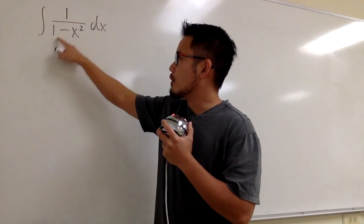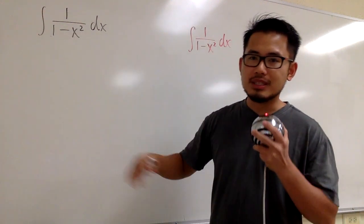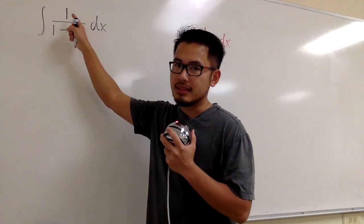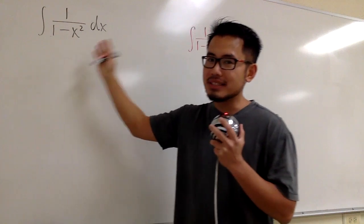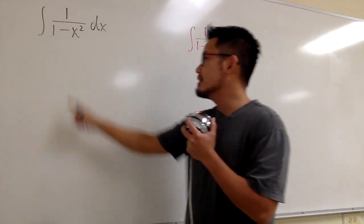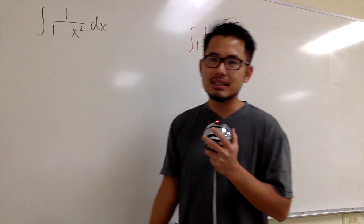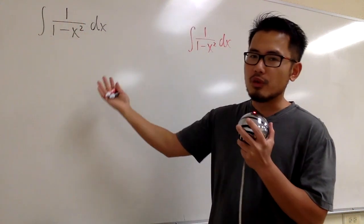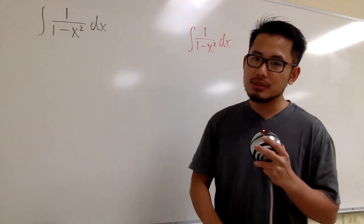For the first one, the integral of 1 over 1 minus x squared, I will do this with a more traditional way for you guys. As you can see, on the top is a 1, it's not an x. Otherwise, I can just do that by u sub, right? And this is a minus, it's not a plus. If this is a plus, then 1 over 1 plus x squared, we know the integral for that, it's just inverse tangent x, so that's nice as well.